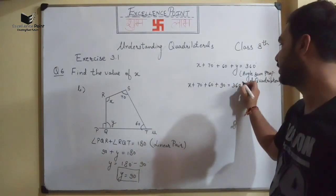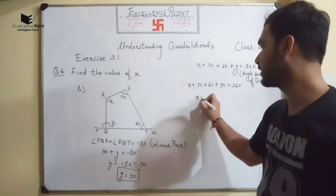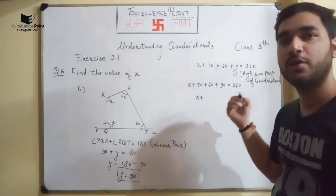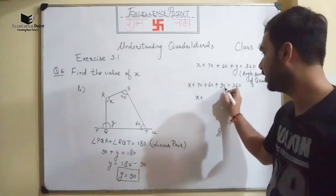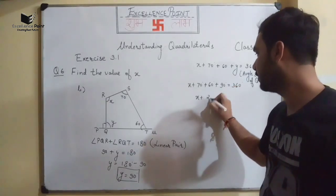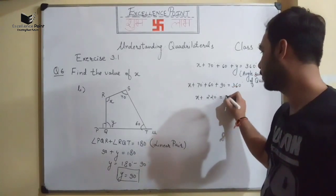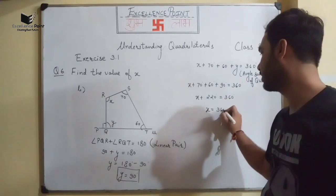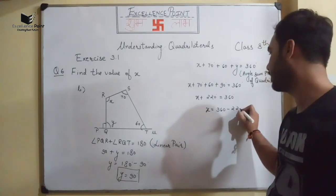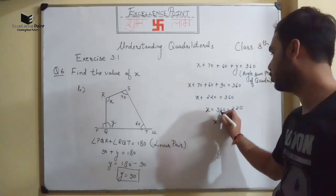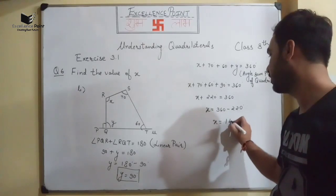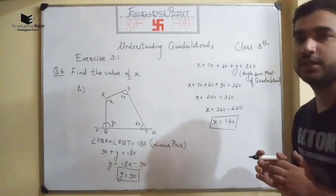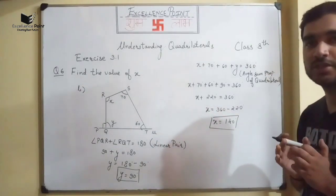Adding: 70 + 60 = 130, and 130 + 90 = 220. So x + 220 = 360°, therefore x = 360 − 220 = 140°. I hope the question is clear.